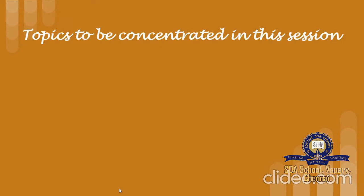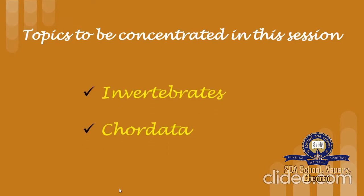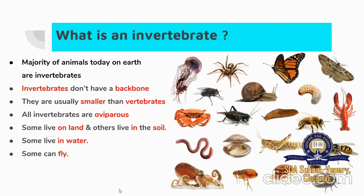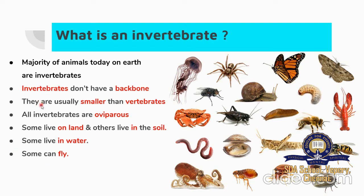The topics to be concentrated in this session are Invertebrates and Chordata. First, we will see what is an Invertebrate. Majority of animals today on earth are Invertebrates. Invertebrates don't have a backbone. They are usually smaller than vertebrates. All Invertebrates are oviparous.